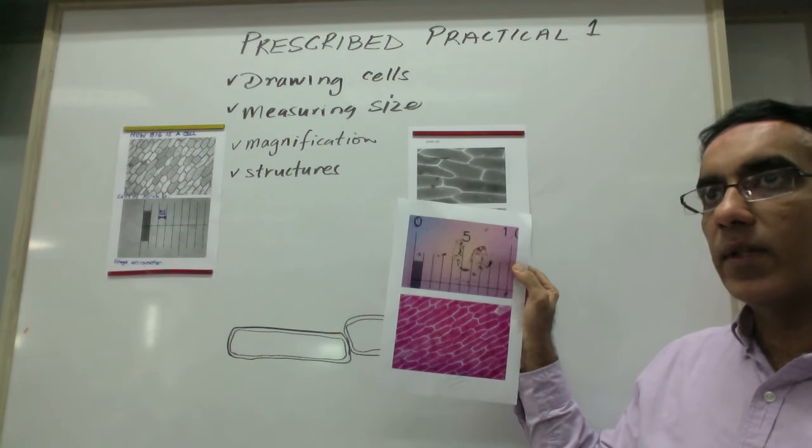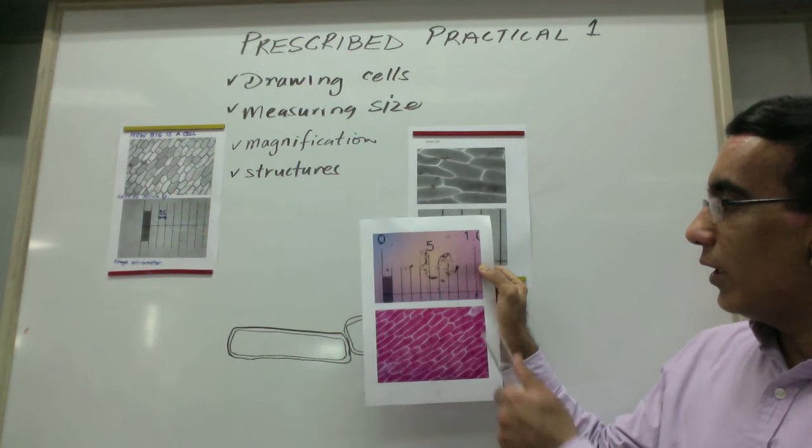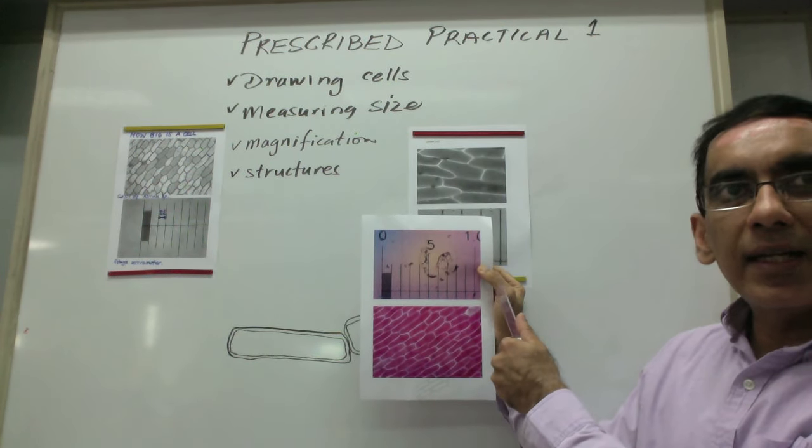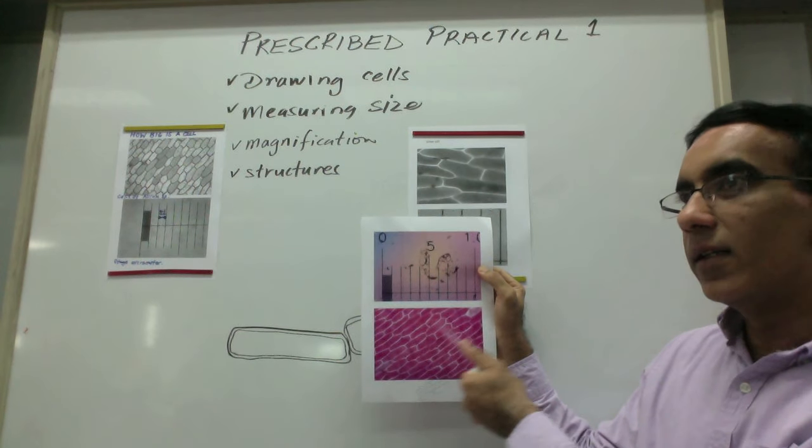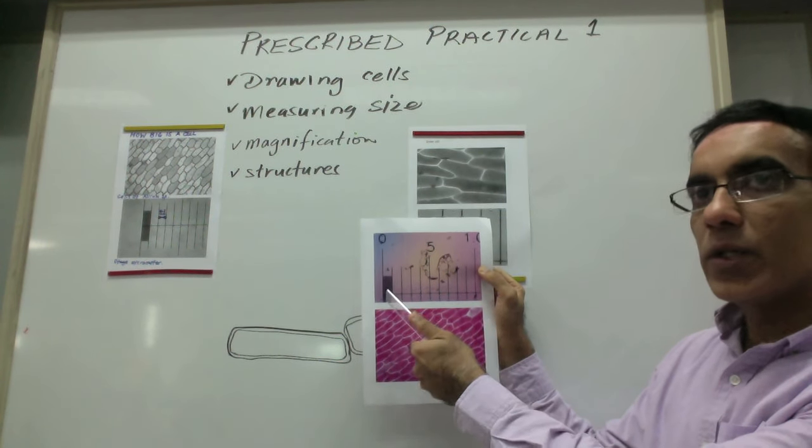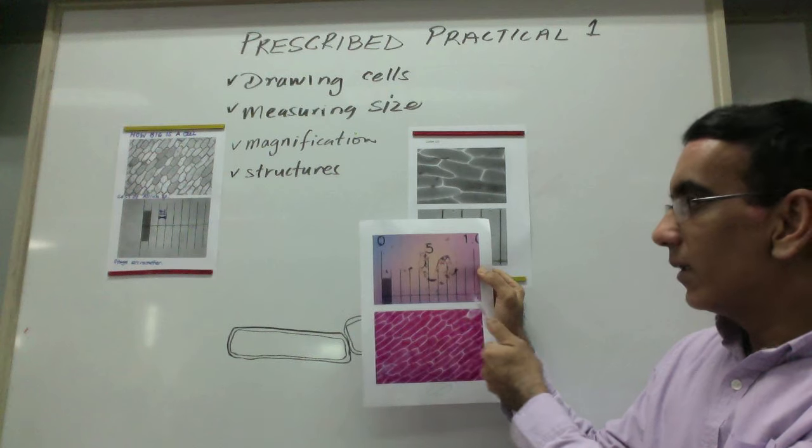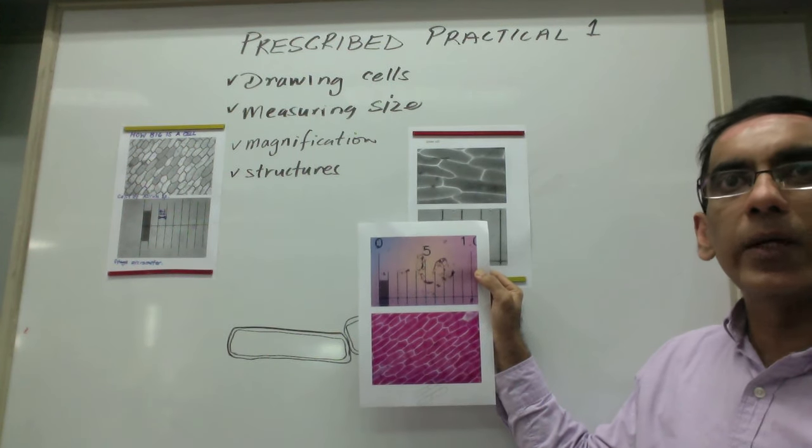And then you have another picture taken at the same scale of the stage micrometer, which is just like a ruler on a microscope slide.